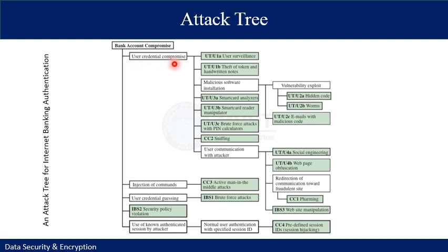The first subcategory is user credential compromise — using user credentials to compromise the account. It can also be done with injection of commands, user credential guessing, security policy violation, and use of known authentication sessions by an attacker. Each type is further divided into subtypes. For example, user credential compromise to log into a bank account system can be done using a variety of aids such as user surveillance and theft of tokens — these are the shaded areas that specify an implementable technique.